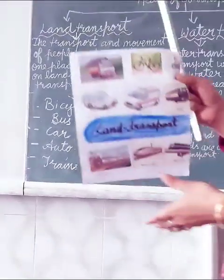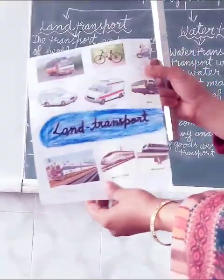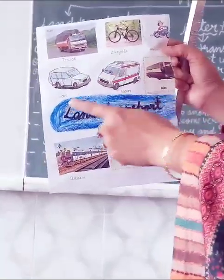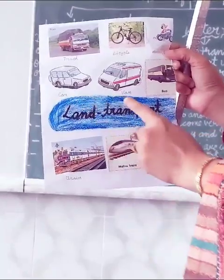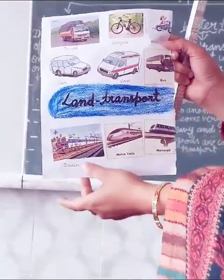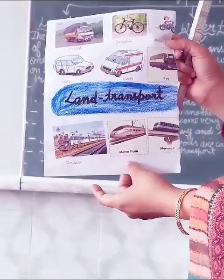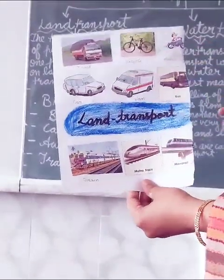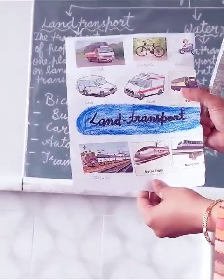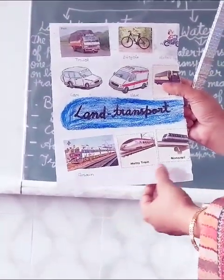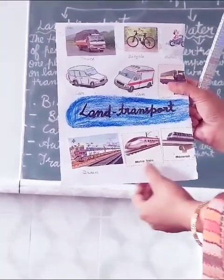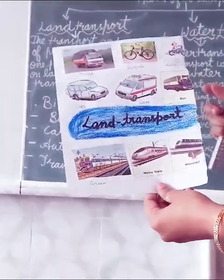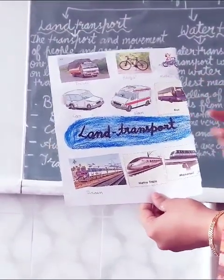You can see here - trucks, bicycle, motorcycle, car, van, bus, trains, metro trains, monorails. These are all examples of land transport. Trains, metro trains, and monorails allow a huge number of people to travel from one place to another at the same time. In a car, only 4 or 5 people can travel.